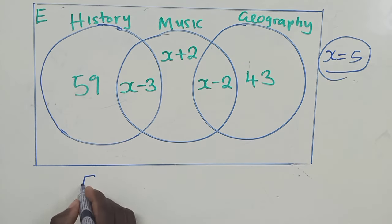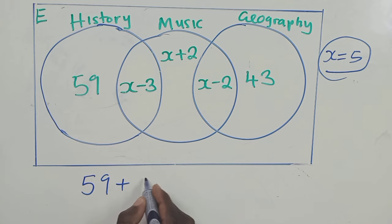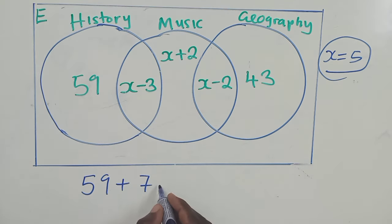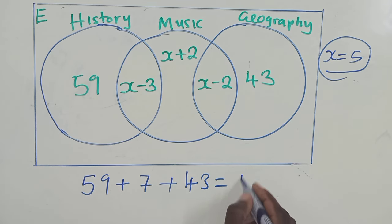So we say 59 plus 7, because we put a 5 here, 5 plus 2 is a 7, plus 7 plus 43. We are getting 109. Let me just confirm the answer on my calculator. So 59 plus 7 plus 43, it's 109. We now go to the next question.